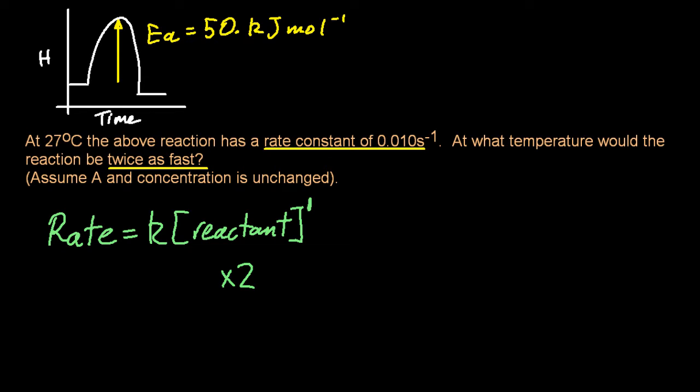And so the rate is twice as fast. Now, I could double the concentration of reactants to get to double the rate, but it says the concentration of reactants is unchanged. So the only way to double the rate, therefore, is to double K, the rate constant.